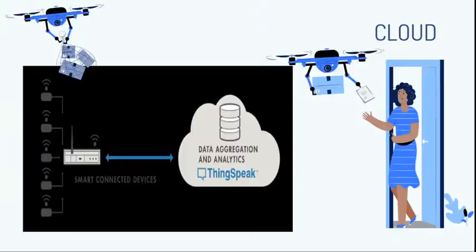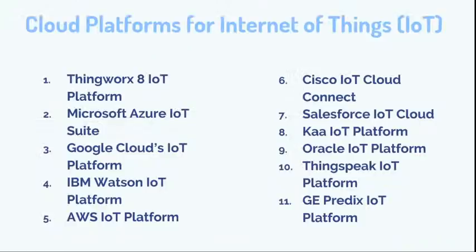Apart from ThingSpeak, there are other cloud platforms: ThingWorx IoT Platform, Microsoft Azure, Google Cloud, IBM Watson, AWS, Cisco, Salesforce, Oracle, ThingSpeak, and GE Predix — these are the top 11 IoT platforms. Using these, you can build an IoT system. Compared to those platforms, ThingSpeak is the most friendly and easy to use. Let's enter into the technical session.